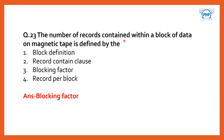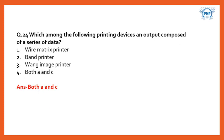The number of records contained within a block of data on magnetic tape is defined by the blocking factor. Which among the following printing devices on output compose of a series of data? The answer is both A and C.